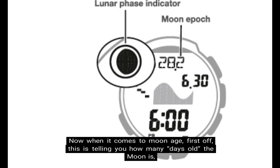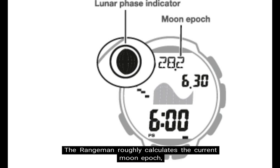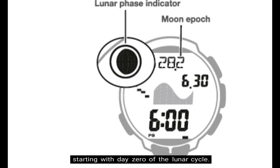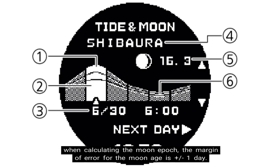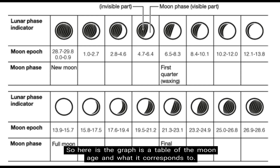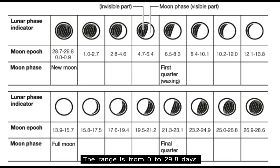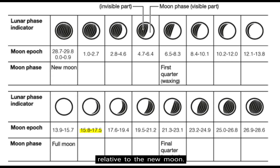When it comes to moon age, this is telling you how many days old the moon is from when it was a new moon. The Rangeman roughly calculates the current moon epoch starting with day zero of the lunar cycle. As the watch only uses integer values — meaning it doesn't use fractional numbers — the margin of error for the moon age is plus or minus one day. The range is from 0 to 29.8 days. So in this example, the moon epoch is 16.3, which corresponds to 16.3 days old relative to the new moon.